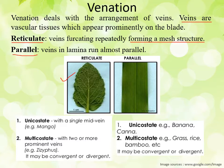The first subtype is unicostate, where we can see a single mid-vein. From this single mid-vein, the lateral veins and the secondary veins emerge, and the finer ones are often called veinlets. The main feature is that here only a single mid-vein occurs in the leaf lamina, and from that, different secondary and tertiary order veins emerge.